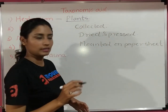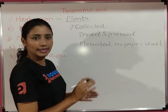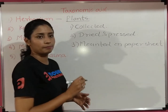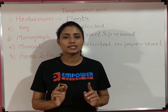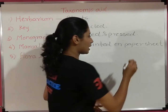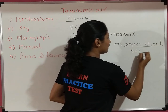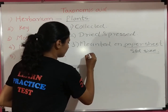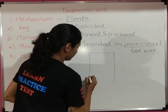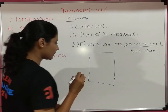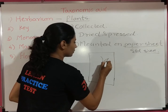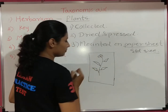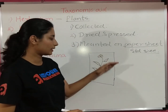So total three steps are there: first the plant is collected, then dried and pressed, and third it is mounted on a paper sheet — a white color paper sheet of standard size. Suppose this is the paper sheet and I have placed a dry plant on it — this is a herbarium.